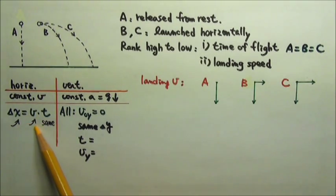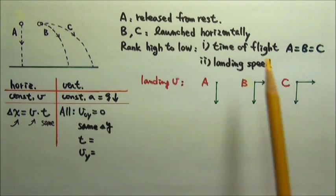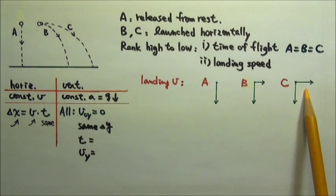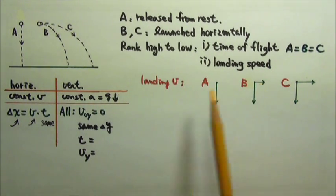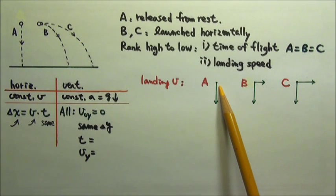C has the largest delta x, therefore the largest horizontal velocity. B has some horizontal velocity, while A has zero delta x and therefore zero horizontal velocity.